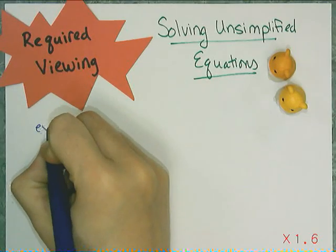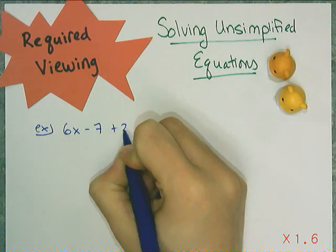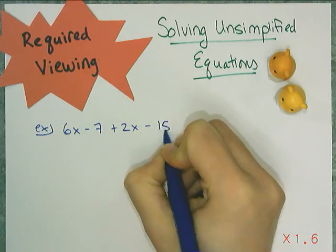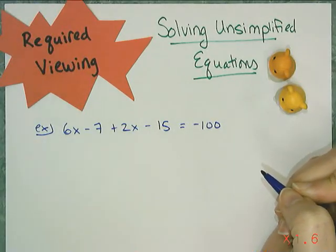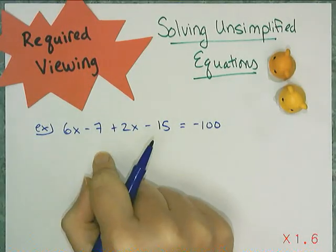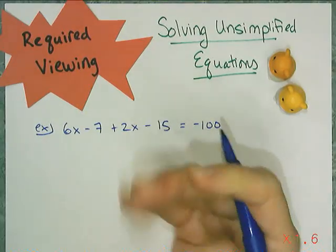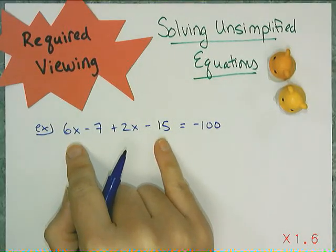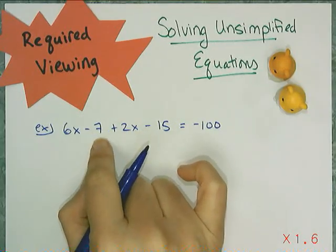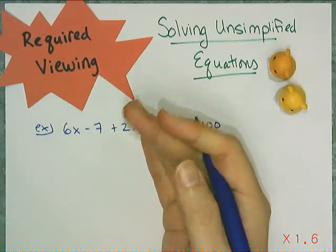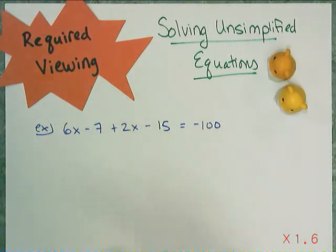There are multiple strategies for these problems. Because there are so many things done to x, there are multiple pathways you can take to simplify the equation and then solve it. I'm going to show you two methods for this one. This is an instance where it looks like you want to combine like terms, and you totally can — you can simplify by combining 6x and 2x, and negative 7 and negative 5, turning it into a two-step equation.